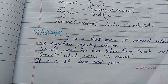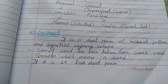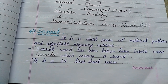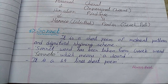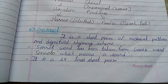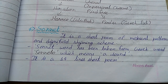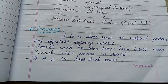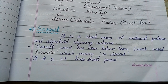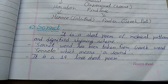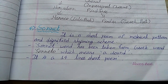What is a sonnet? It is a short poem with a metrical pattern and a dignified rhyming scheme. It is a very small poem and very famous for its rhyming scheme. The word sonnet has been taken from the word soneto, which means a sound.